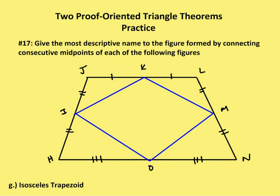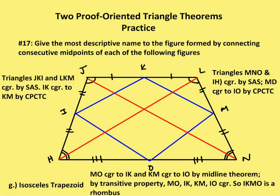Now I have an isosceles trapezoid, which is the last figure. JH and LN are congruent, and JL is parallel to HN. I connect the midpoints and use the midline theorem. I've also marked that JHN is congruent to LNH. In an isosceles trapezoid, the upper and lower base angles are congruent. Triangles JKI and LKM are congruent by side-angle-side: upper base angles congruent, JK congruent to KL, JI congruent to LM. So IK is congruent to KM by CPCTC.